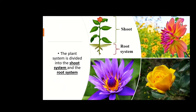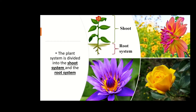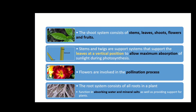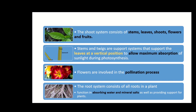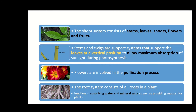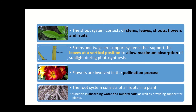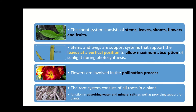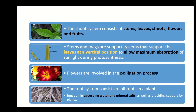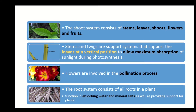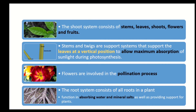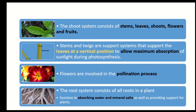The plant system is divided into the shoot system and the root system. The shoot system consists of the stem, leaves, shoots, flowers, and fruits. The stem and twigs support the system, and the leaves are placed in a vertical position to allow maximum absorption of sunlight during photosynthesis. The flowers are involved in the pollination process. The root system consists of all roots in a plant, and its function is to absorb water and mineral salts as well as provide support for the plant.